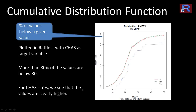For CHAS equals yes, the values are clearly higher — a lower percentage of values fall below any given price. For example, roughly 20% of households adjoining the river have a median value less than 20, whereas almost 40% of overall households have a value less than 20. So clearly, properties adjoining the river are much more expensive.